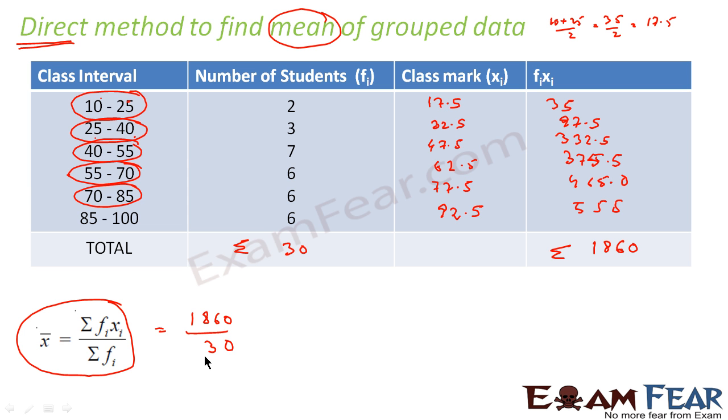If you divide this, you get 62. So mean of this grouped data is 62, and that is 62. This is the value I found using the direct method. In the direct method, you don't need to do anything.